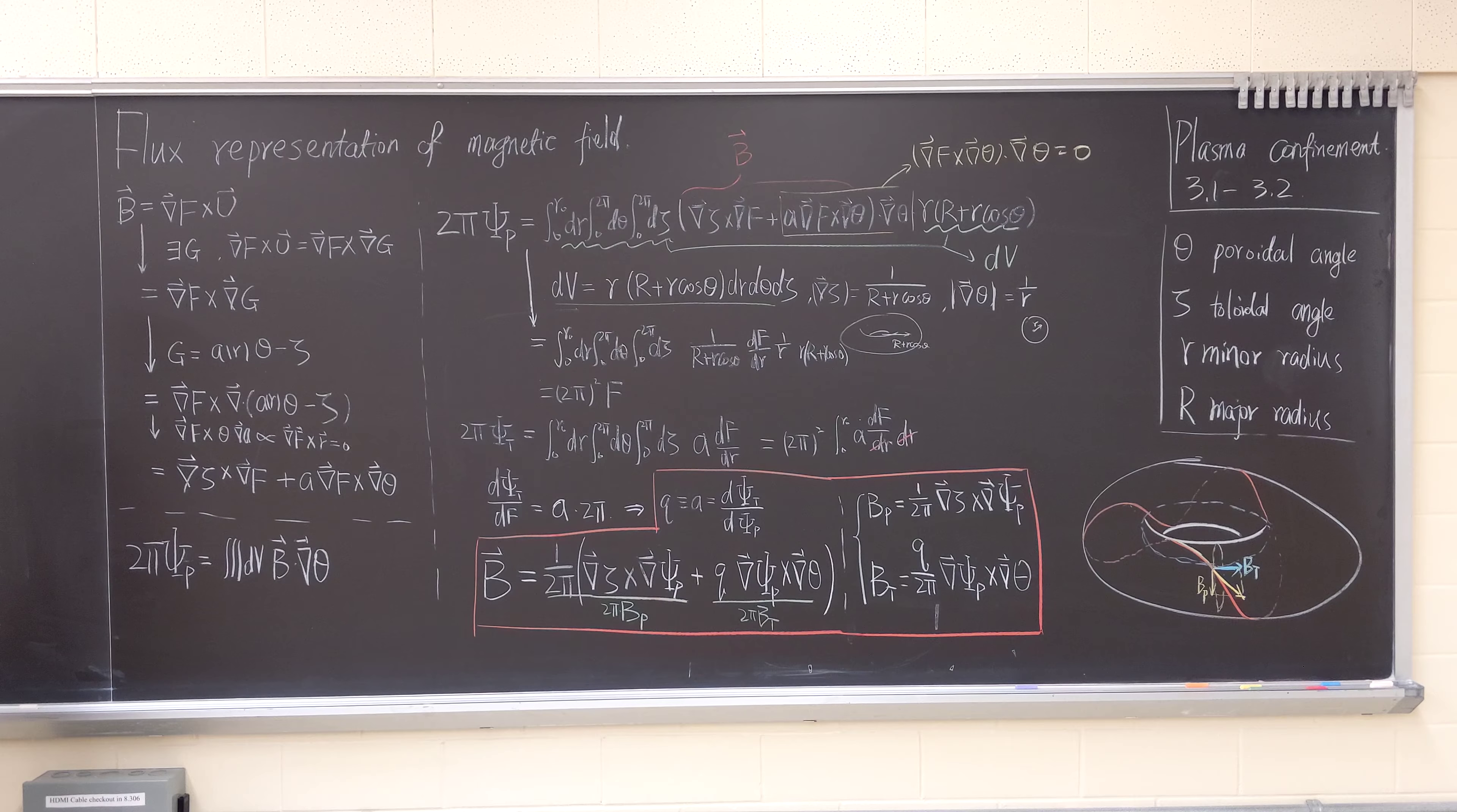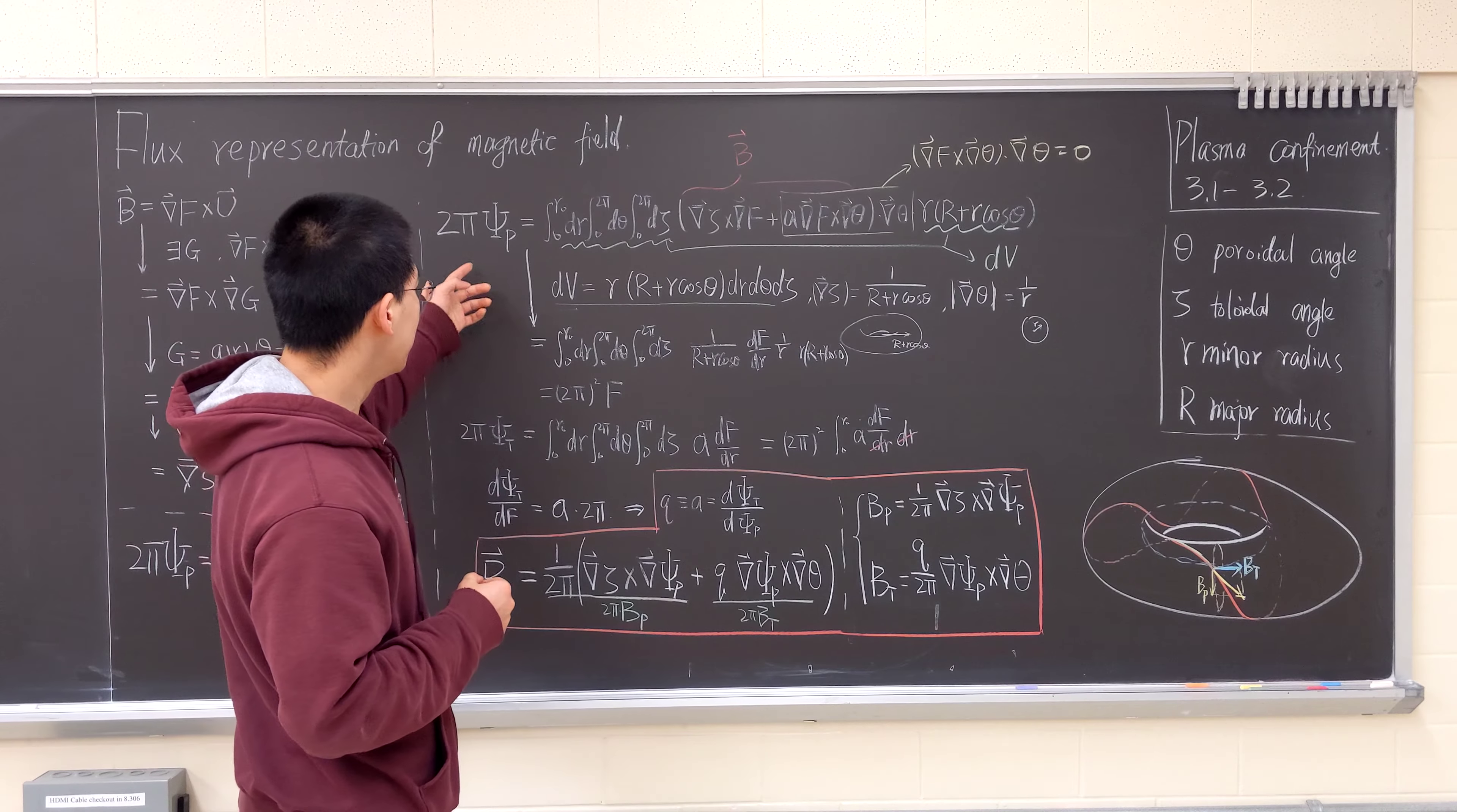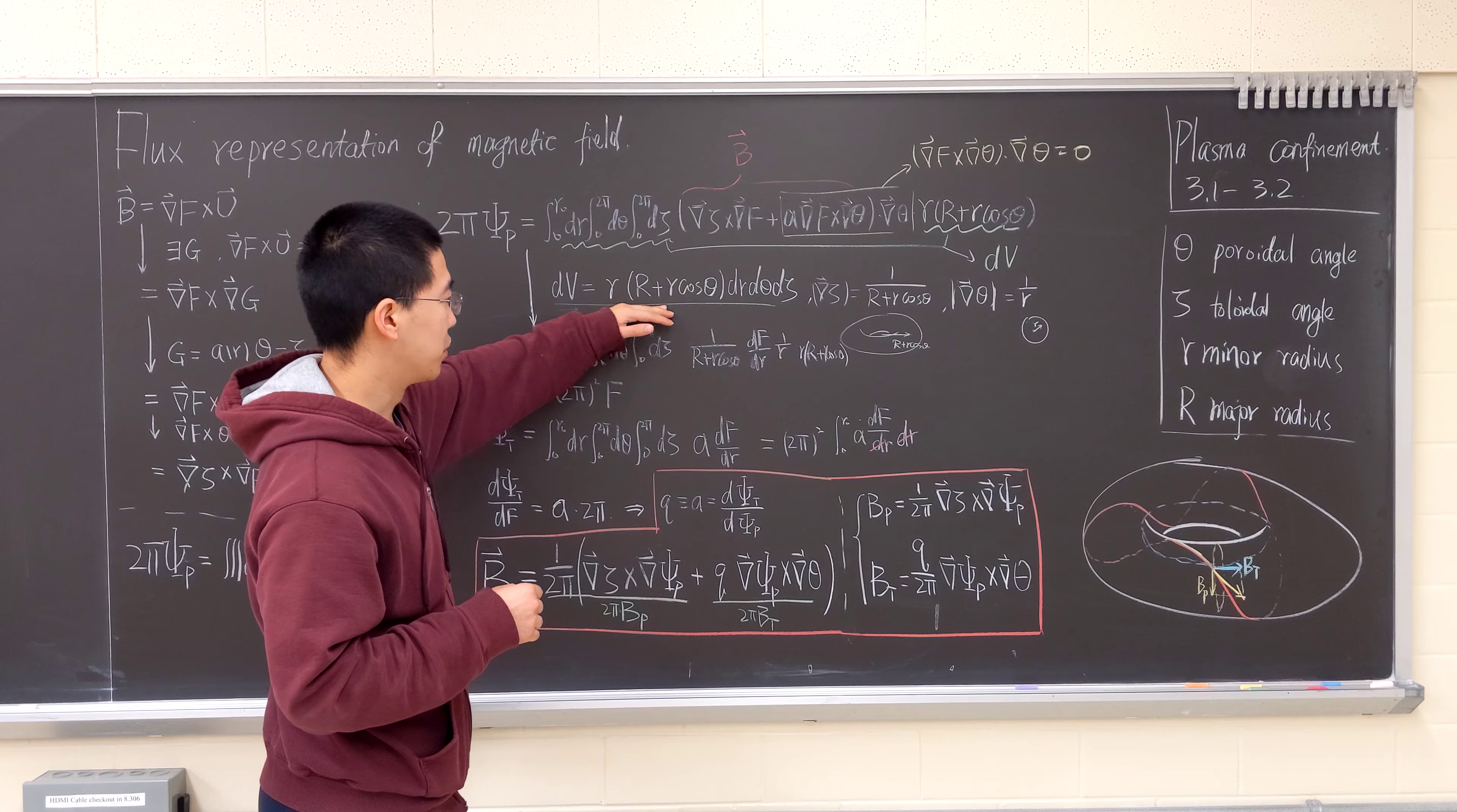Let's try to express the magnetic field in terms of the poloidal and toroidal fluxes. Here is the definition of the poloidal flux. We can write the volume. For a torus, the volume elements will look like this.